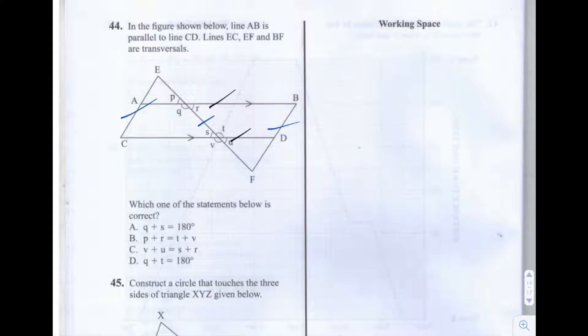We're asked which of these statements below is correct. So when we're given a question that's framed like this, it's best to look at the answers and to work backwards from the answers using a process of elimination. So the first one is Q plus S is equal to 180.